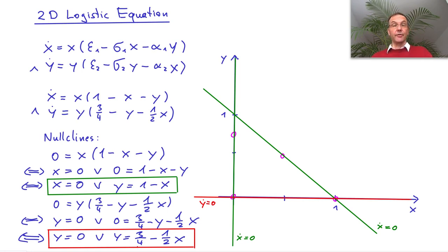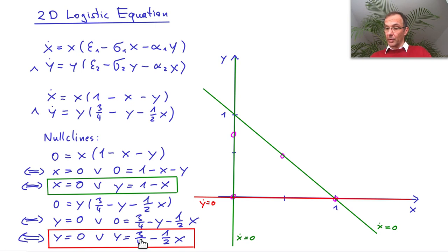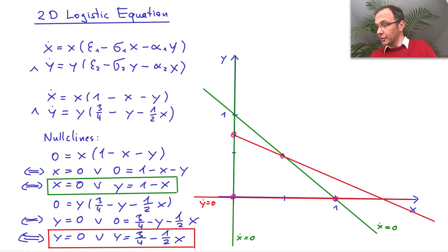The second y nullcline starts at three quarters for x equals zero, so it starts there. And then it goes down at half the speed as before, so the slope would be minus one half. That means if we look for y equals zero, we move this to the other side, multiply with two, then we get six over four, which would be three halves, or one and a half. So the curve would go from there to one and a half.